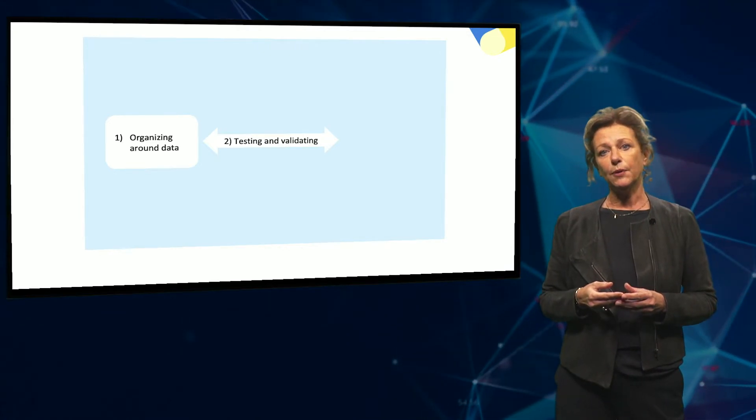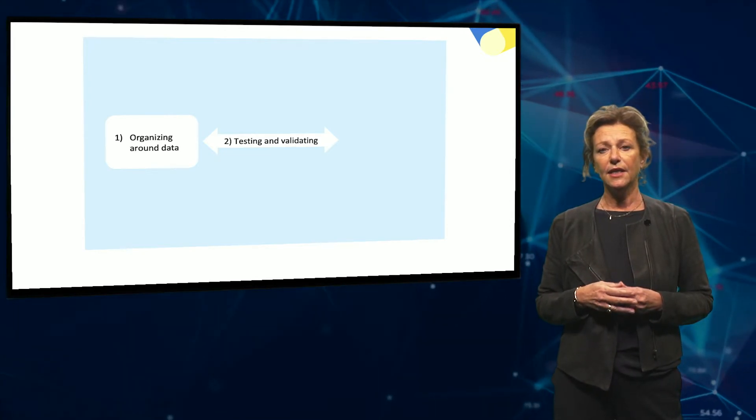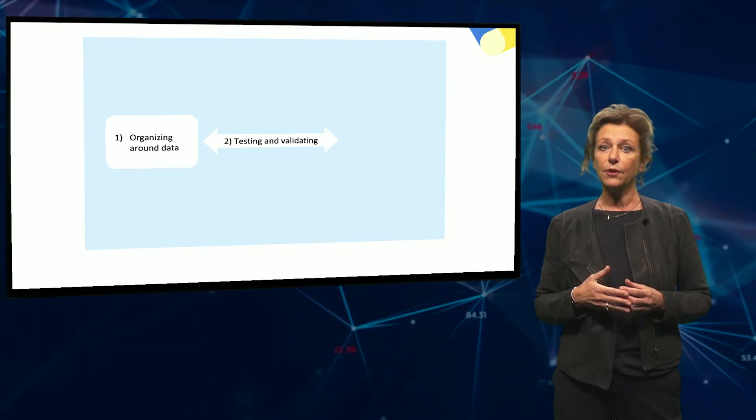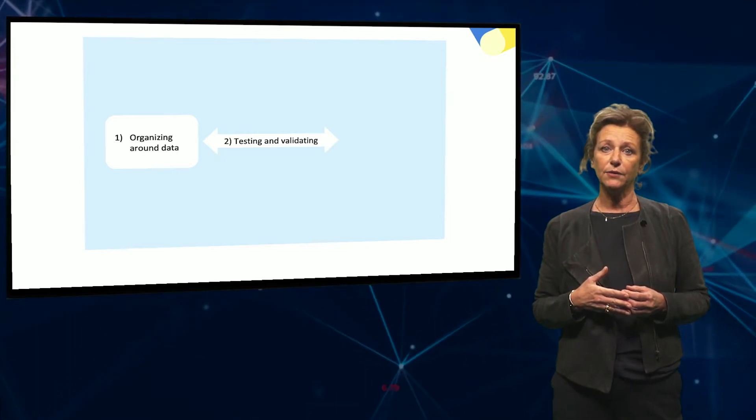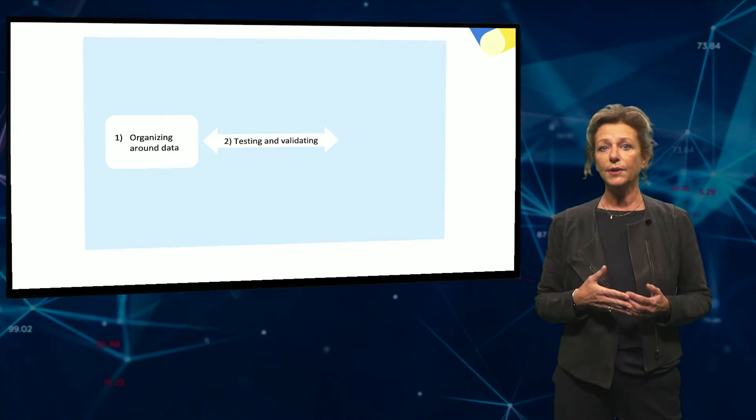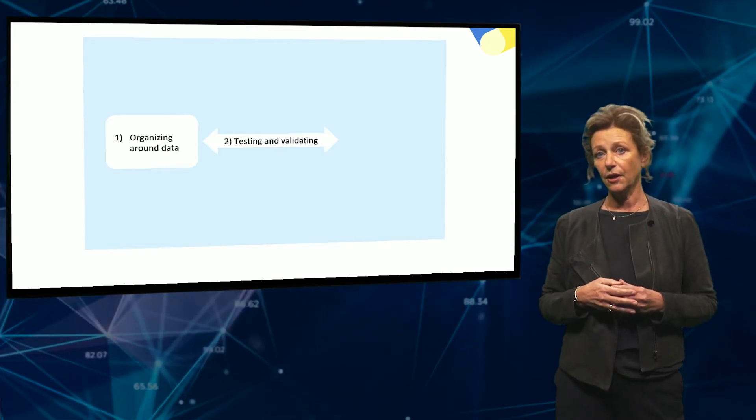For example, deciding if an AI system is good enough to take over intelligence tasks is a complex one. Especially because it is difficult to explain how outcomes come about. To test and validate AI one needs to understand the knowledge intensive work that the system targets.